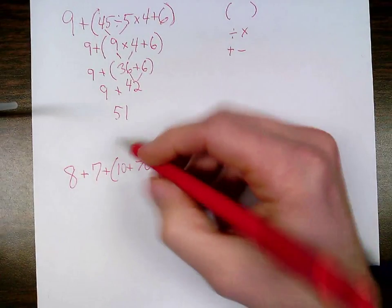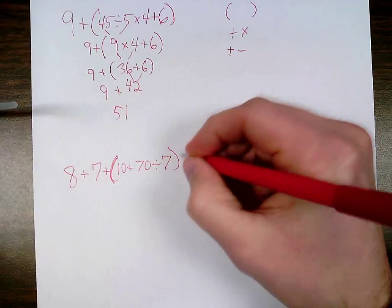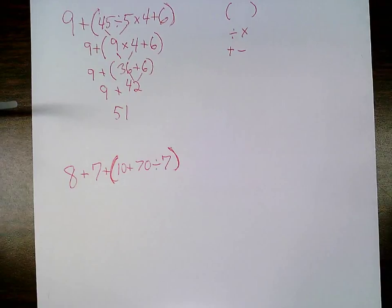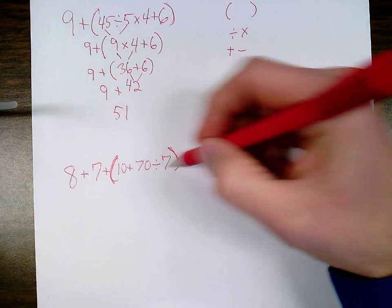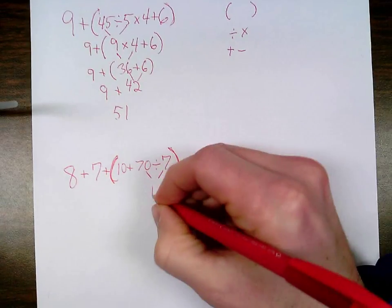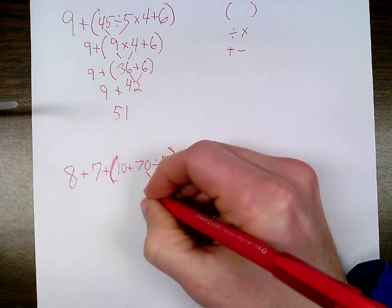Once again, what's inside the parentheses first, starting off with—excuse me—starting off with multiplication and division, and I have division in there. 70 divided by 7 is 10, and I bring down everything else.